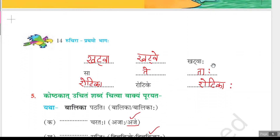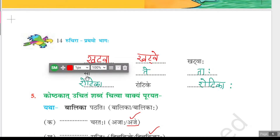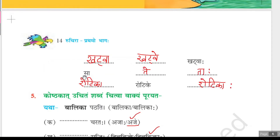Next, katvaha is bahuvachanam, so ekavachanam is katva and dvivachanam is katve: katva, katve, katvaha. Next, sa is given; te is dvivachanam and taha is bahuvachanam. Next, rotike is dvivachanam; ekavachanam is rotika and bahuvachanam is rotikaha: rotika, rotike, rotikaha.